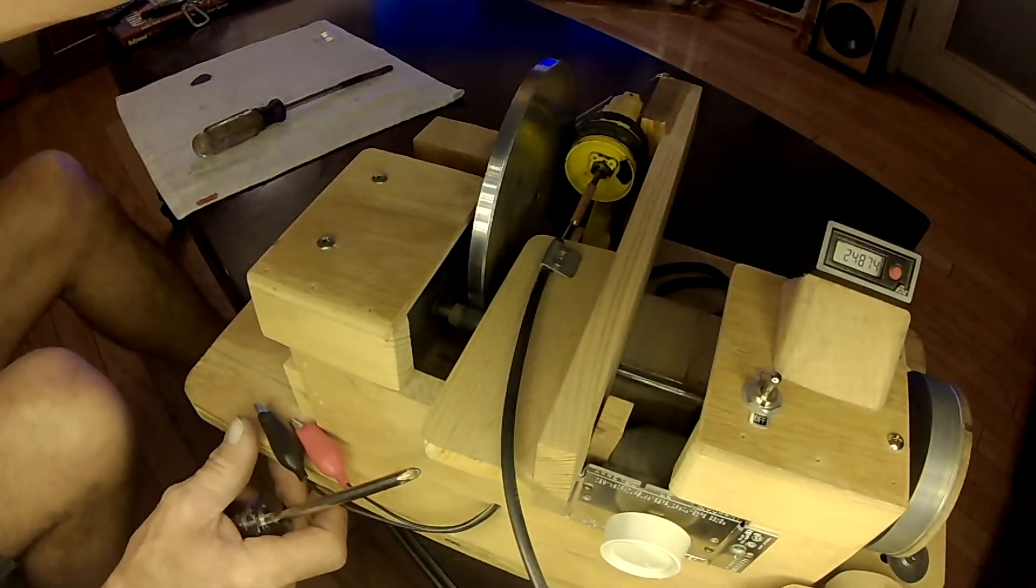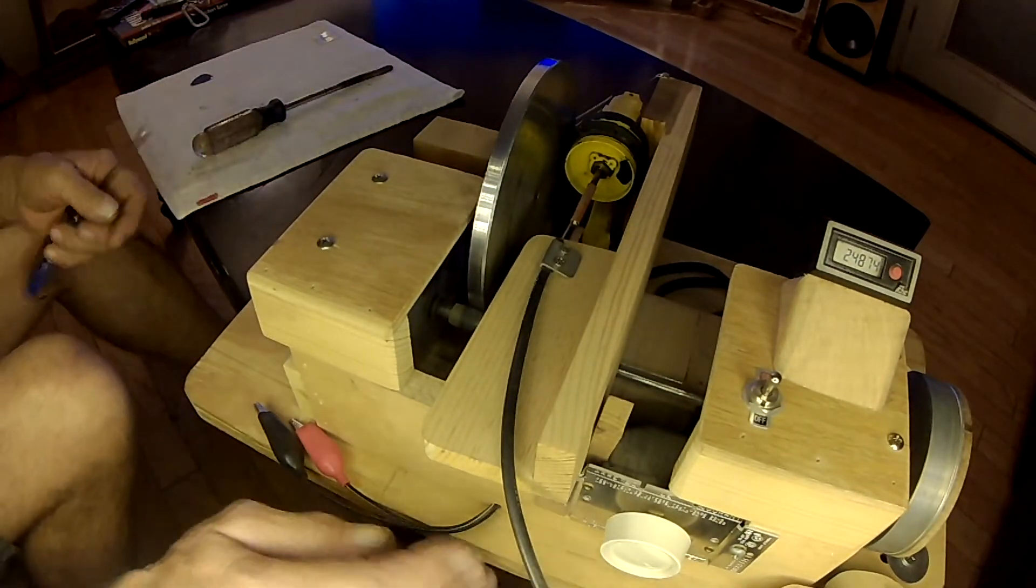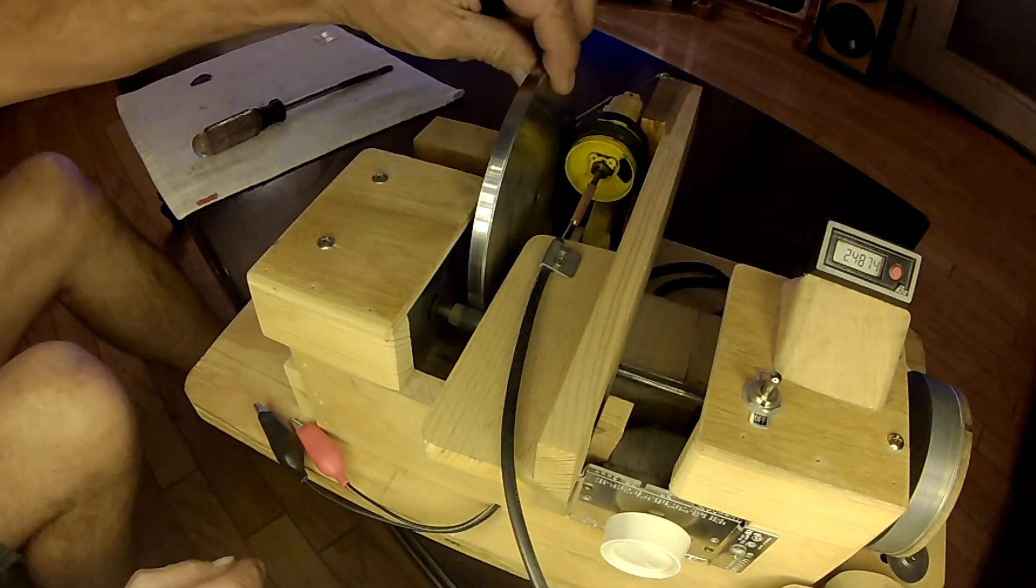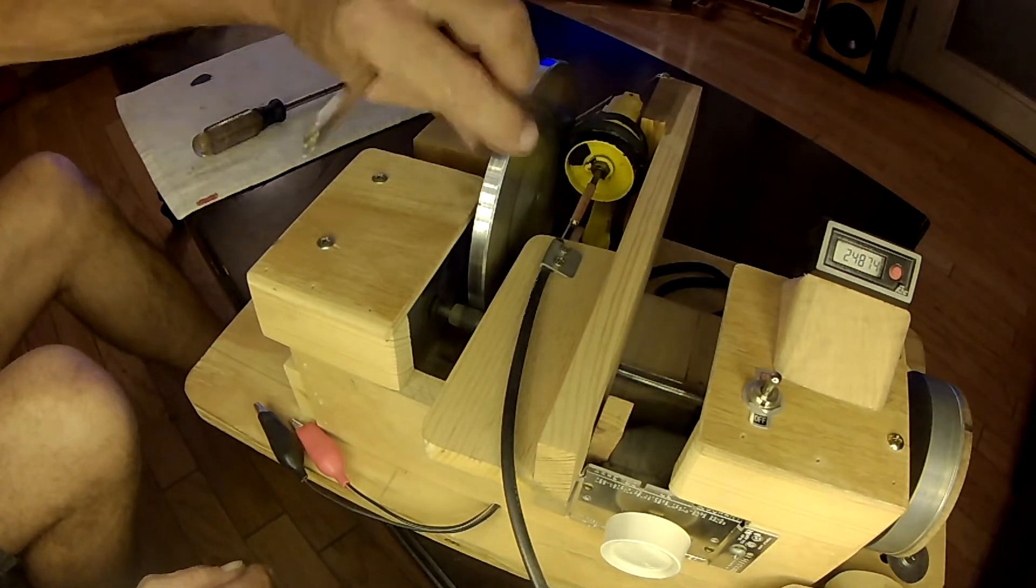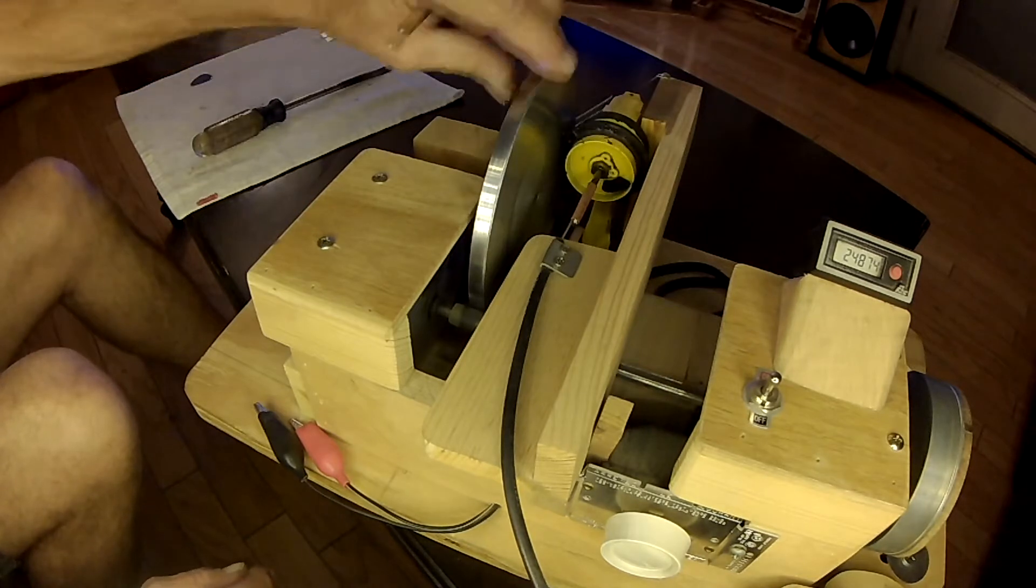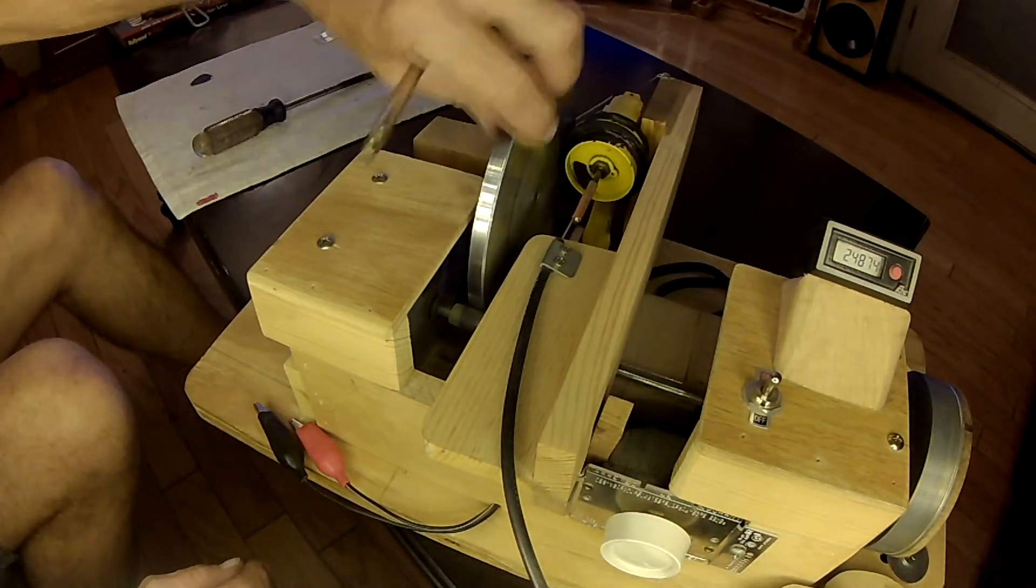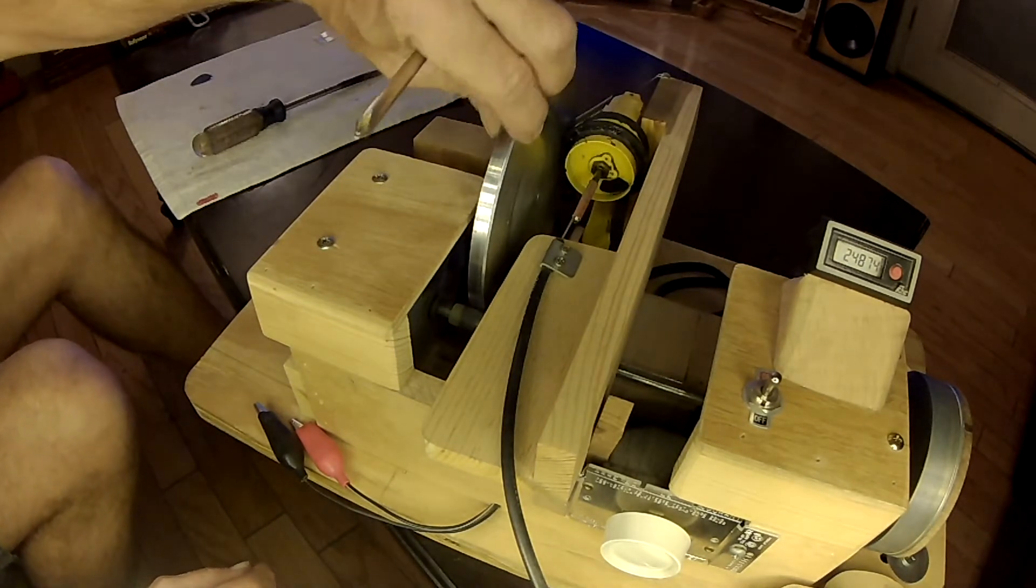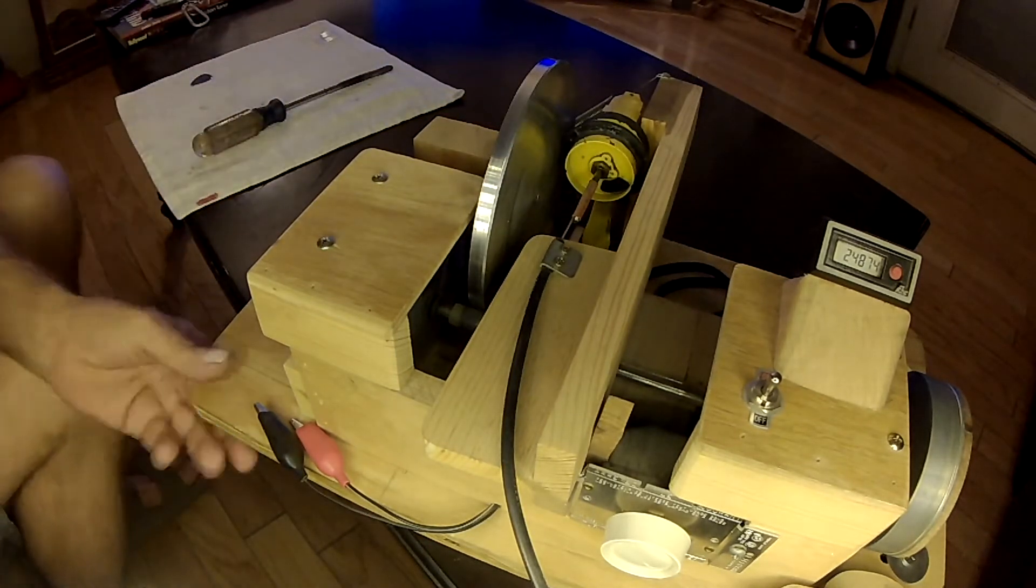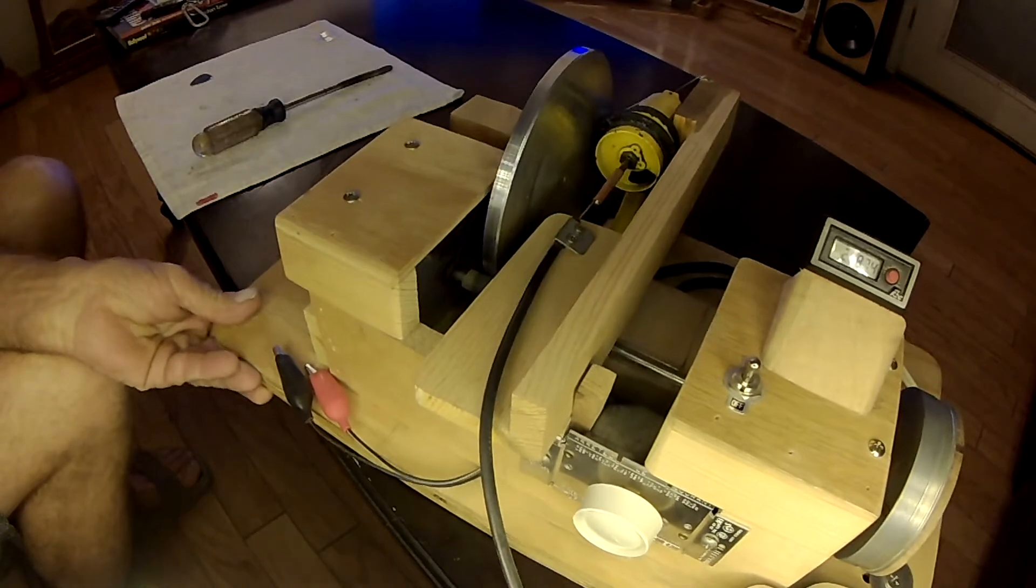Here you can see the fishing reel where it's driven by this six inch diameter sanding disc that I repurposed just for the purpose of this here. And it all works pretty smoothly.